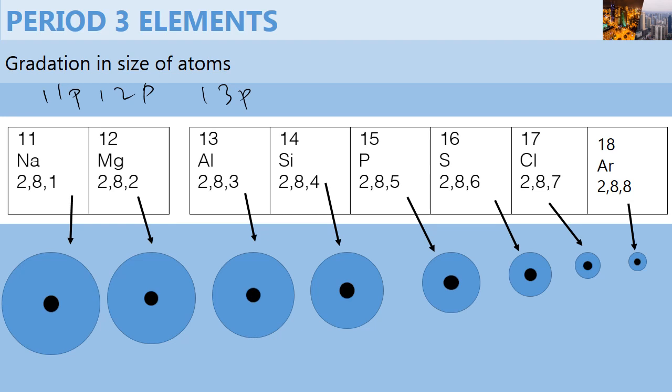As you can see, the protons are located in the nucleus, and as you move across the period, there is an increase in number of protons, leading to an increase in the nuclear charge, and hence a decrease in atomic radius.